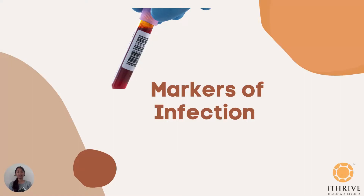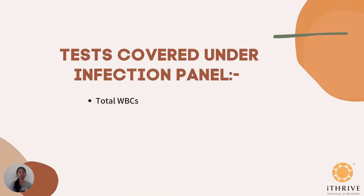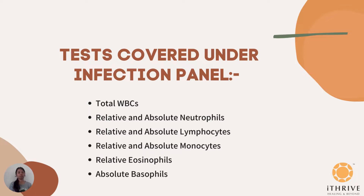I am here to let you know about the markers of infection that should be considered by taking a blood test. The tests that should be covered are total WBCs, Relative and Absolute Neutrophils, Relative and Absolute Lymphocytes, Relative and Absolute Monocytes, and Relative Eosinophils and Absolute Basophils.